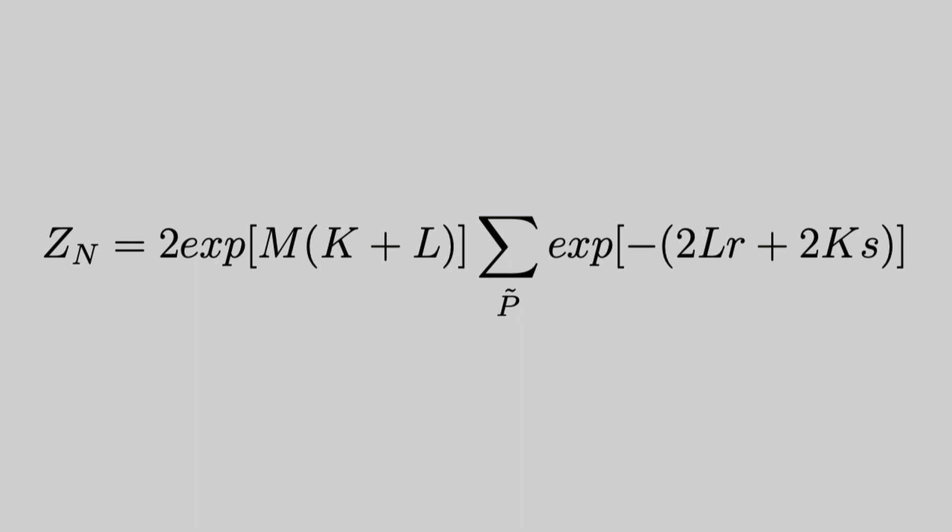Okay, so now back to our partition function, which looks something like this. We're interested in this sum here, where again, we're summing over all closed polygons. So considering that this is a negative exponent, the most dominating terms are the ones where R and S are the smallest.